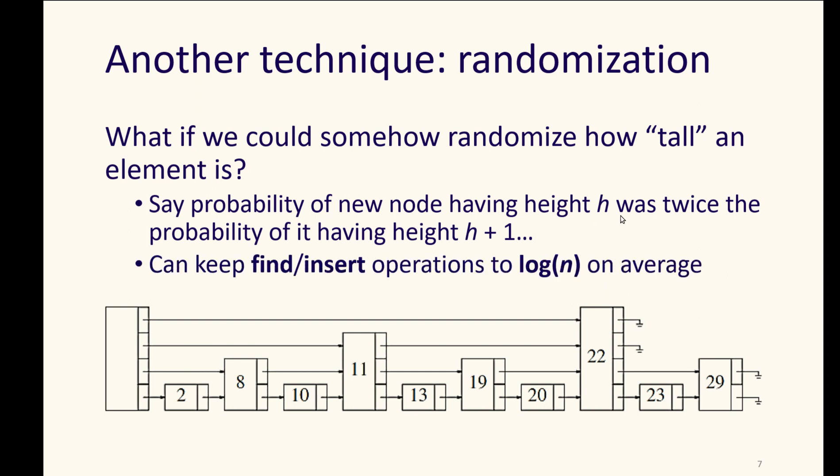Then, we can keep our find operations and our insert operations to an average of log n, because we're not redoing a lot of pointers for every insertion. We're potentially adding a few pointers for that one new node. And that new node might create a new bump for us here, where we get a skip. We get a separation there that allows us to skip through some of our data.